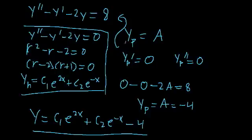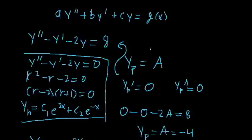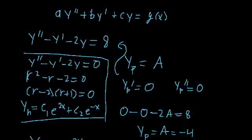This example was fairly easy, but in all cases where you use the method of undetermined coefficients you use the same steps. First, find the homogeneous solution. Second, guess a form of y_p that mimics g(x). Third — which we didn't need here but will cover in later examples — make sure the particular solution isn't already part of the homogeneous solution. If they overlap, modify it; if not, proceed to plug in your guess and find values for the undetermined coefficients that satisfy the equation.